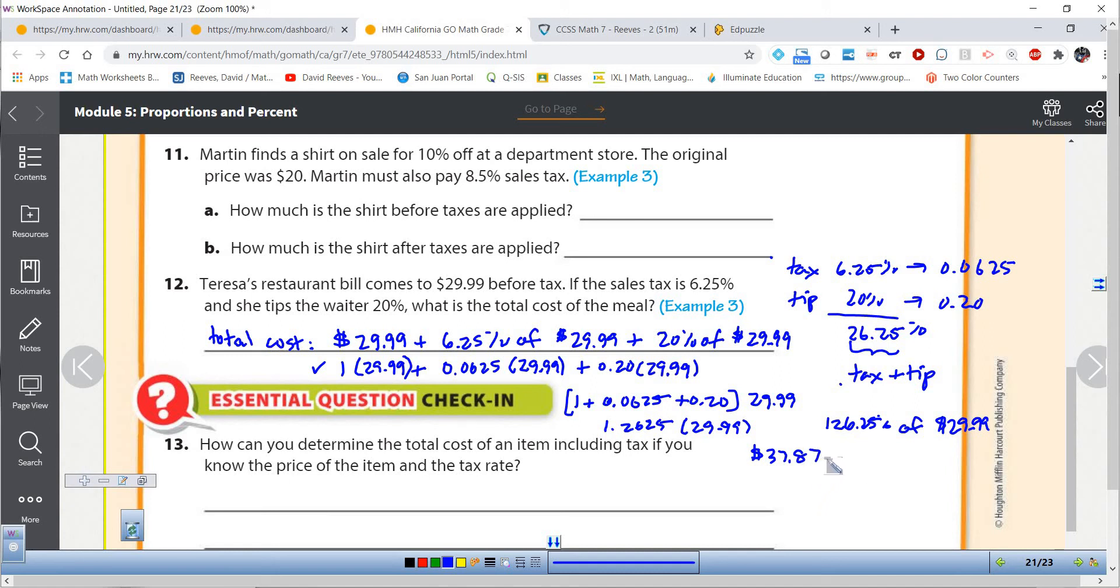So even though mathematically, the answer should be $37.86, real life application here, it's going to be $37.87. Of course, you could tip whatever you want to. But if they were putting this in the computer and they were telling you, it would come out to $37.87.